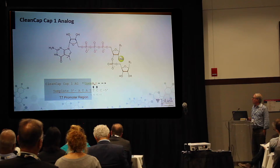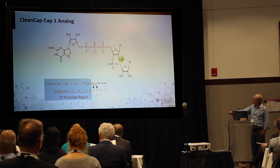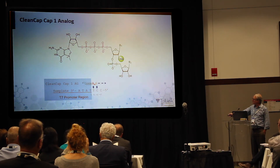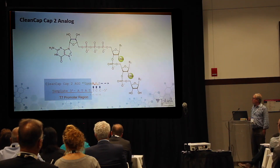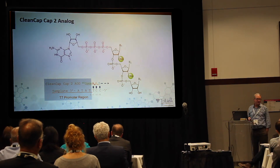In order to get around obstacles like stuttering at the beginning and the inability to make a cap one structure co-transcriptionally, we came up with the idea of using a trimer instead of a dimer to cap. Here you can see the M7G and then two bases sitting at the plus one and plus two positions. This allows us to bring in a methyl group to make cap one co-transcriptionally, and this caps extremely efficiently. We can also make a cap two structure by using a tetramer, binding at the plus one, plus two, and plus three positions, bringing in two methyl groups. This is very early days and we're just learning how to make these.